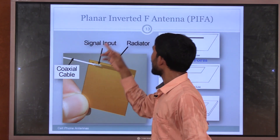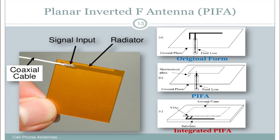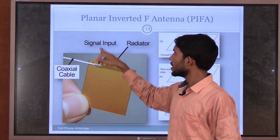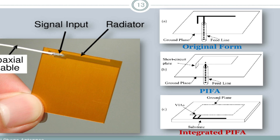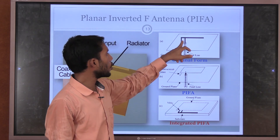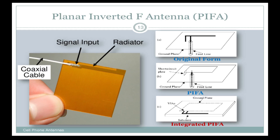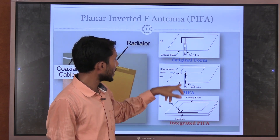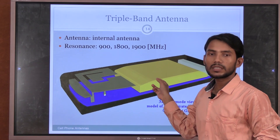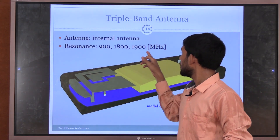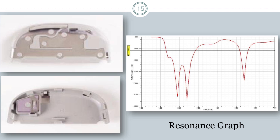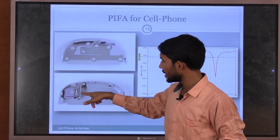The Planar Inverted-F Antenna (PIFA) has a specific antenna position with a coaxial feed — we give a 50-ohm coaxial feed line. There is a radiated section and a signal input. The original form is the planar inverted-F antenna: we invert the F-shape, giving it the name 'planar inverted-F.' It has a short circuit plate and a ground plate. This antenna's internal configuration resonates at 900 MHz, 890 MHz, and 1900 MHz, and this shows how the PIFA is fitted inside the cell phone.